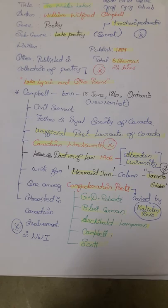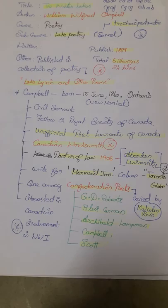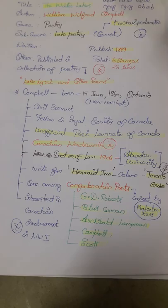It is composed of 6 stanzas and 24 lines. The rhyming scheme used in stanzas was ABAB CDCD AEAE CFCF CGCG ABAB.